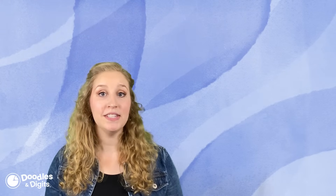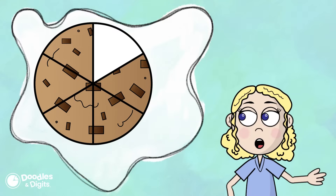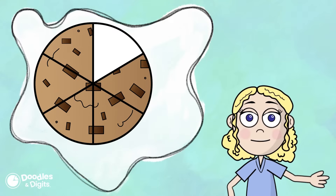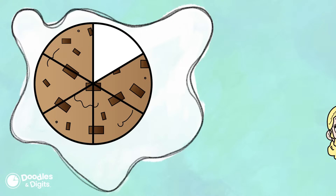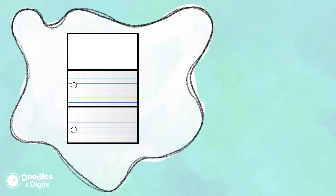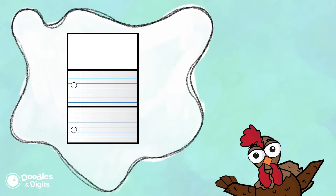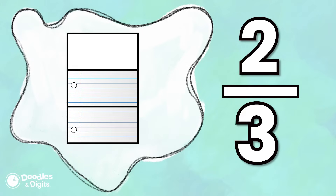I'm going to show you a couple different models and let's see if you can name the fraction. Let's try this one. This is a fraction model — you might notice that this is cut into pieces. When do you think you would use these models when solving a problem? There are five pieces there and there's six pieces in a whole, so our fraction is five sixths. There are two pieces in the picture and there's three pieces in a whole, so our fraction is two thirds.